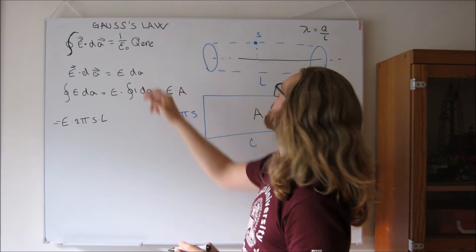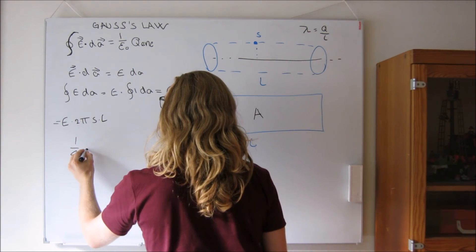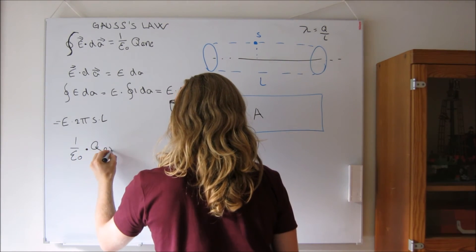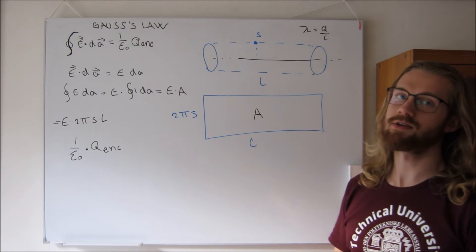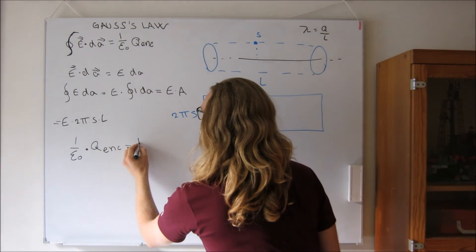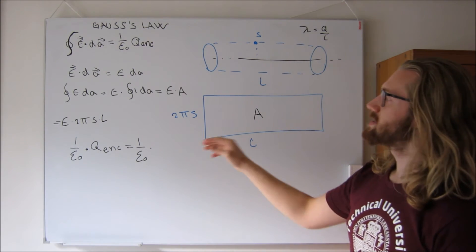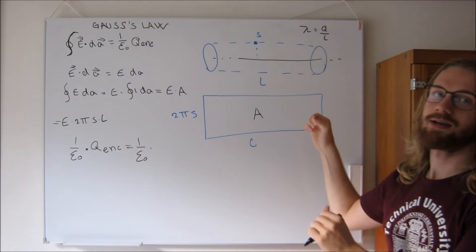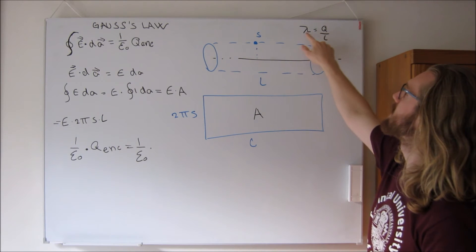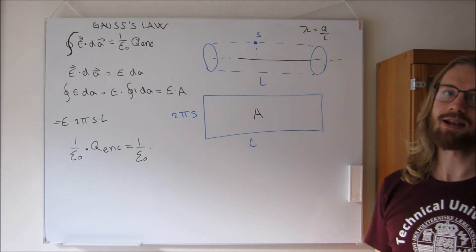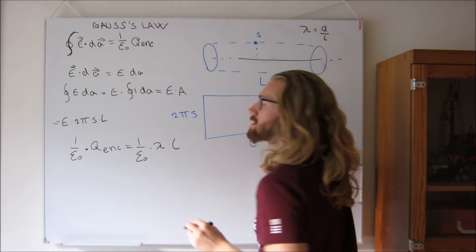On the right-hand side, we take 1 over ε₀ multiplied by the charge enclosed inside the cylinder. If we take a longer piece of wire, the charge enclosed is simply the linear charge density lambda times the length L.